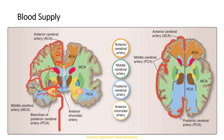This is the anterior communicating artery and this is the middle cerebral artery. The middle cerebral artery has the anterior striate arteries, which supply the lentiform and caudate nucleus. The anterior cerebral artery and the anterior choroidal artery are similarly supplying the lentiform and caudate nucleus.